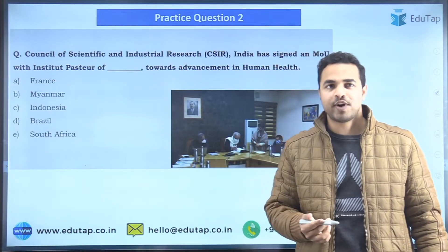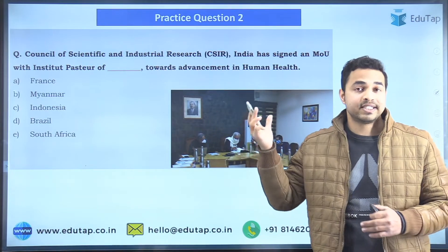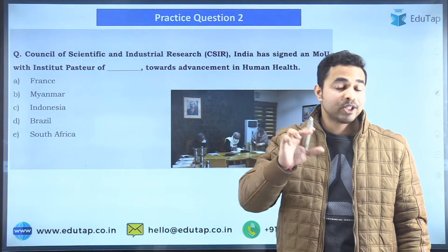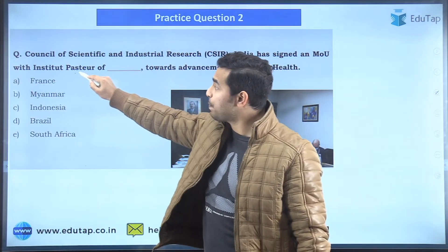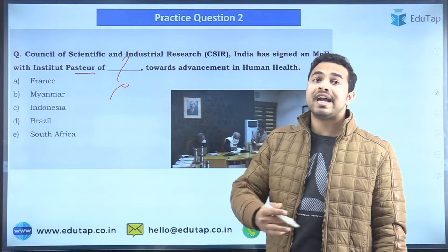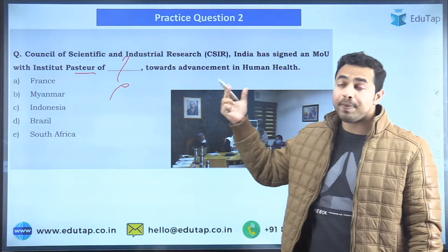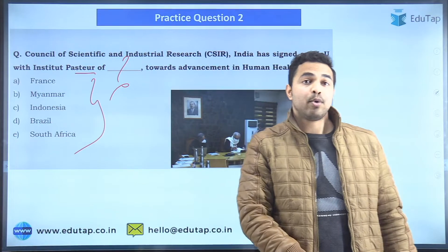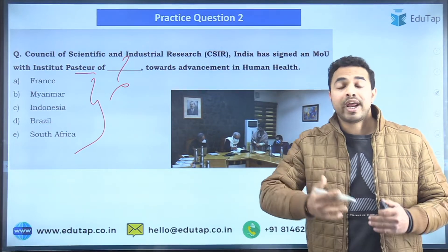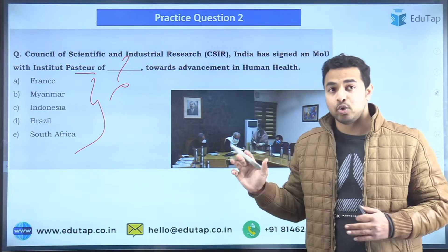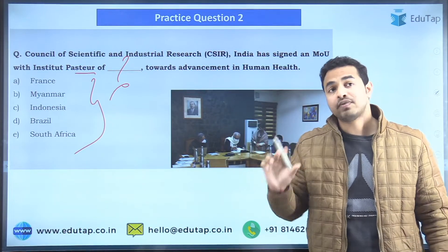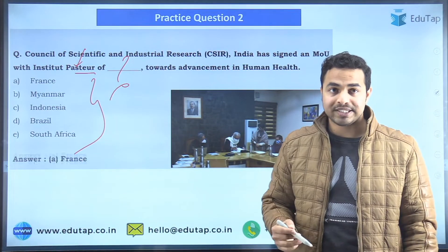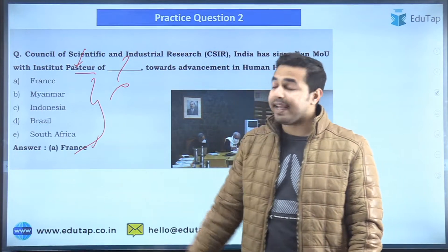Moving to the next question: the CSIR — Council of Scientific and Industrial Research of India — has recently signed an MOU with the Institut Pasteur of which country, towards the advancement in human health? These two organizations from India and one particular country have signed an MOU to promote research towards the advancement in human health. You are required to identify the name of that country.